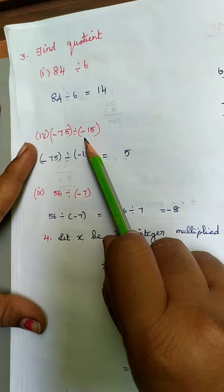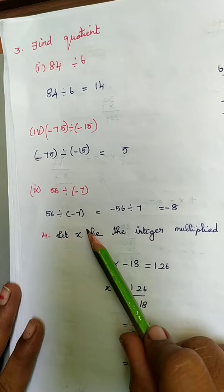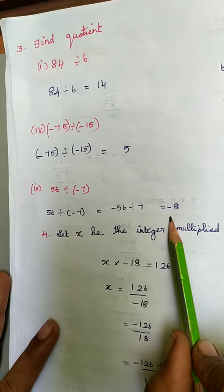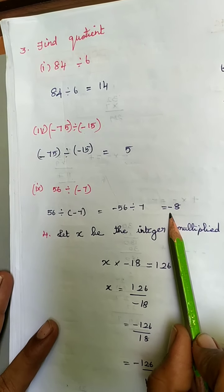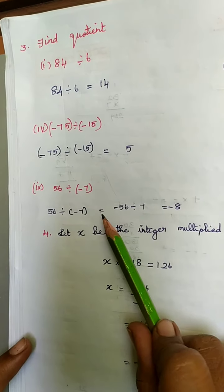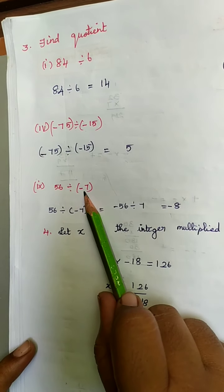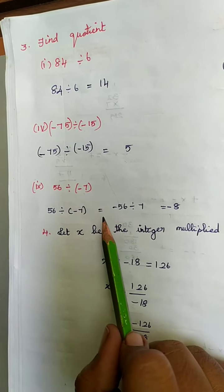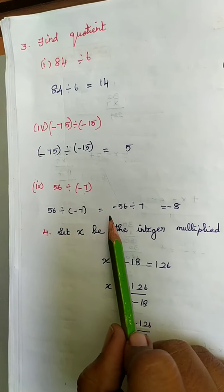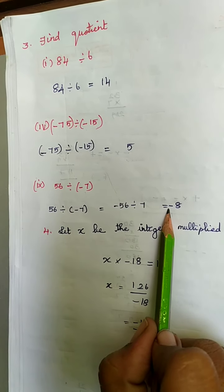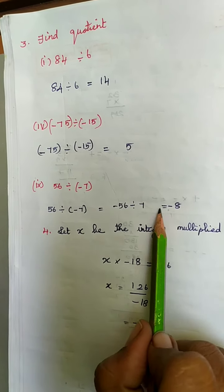Next: 56 divided by minus 7. Using the 7 table, dividing gives 8 since 7 eights are 56. Here the denominator is negative. We bring this negative to the numerator, so your answer will have a minus sign — minus 8.